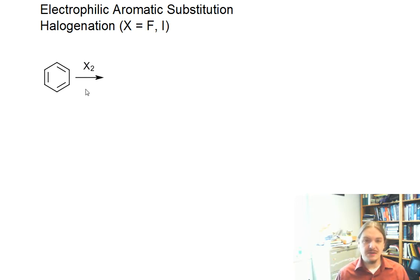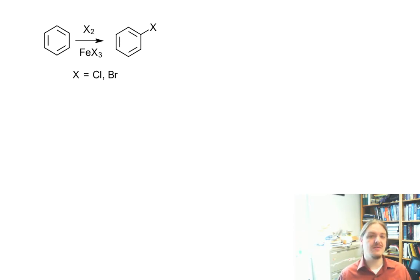In the previous video, I shared a reaction using halogen like chlorine or bromine and iron trichloride or iron tribromide as a catalyst, generating the halobenzene. Well, this reaction does not work for iodine. Iodine is not reactive enough, and it does not work with fluorine. Fluorine is way too violently reactive.